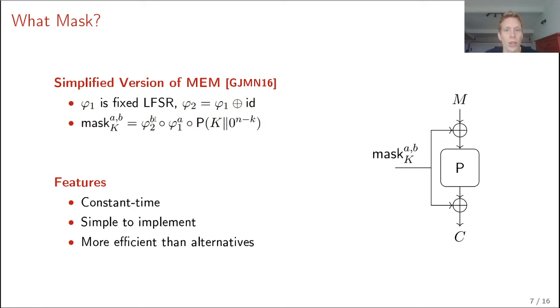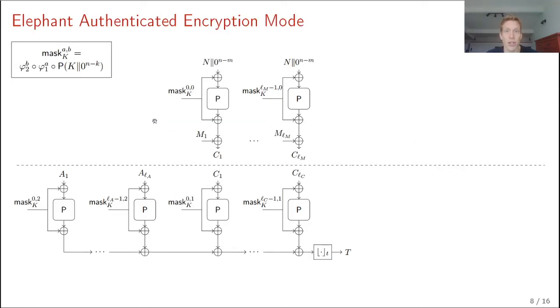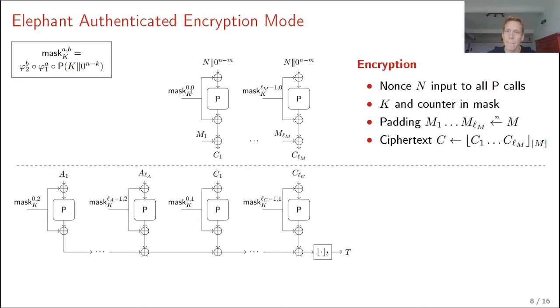Now we've set the primitive and the mask, we can go to the mode. And this is the Elephant authenticated encryption mode. So in the top left here, I copied the definition of the mask from the previous slide. And I will go through the picture from top to bottom, starting with the top, of course. And in the top we see the encryption. And the encryption gets its input a nonce. This nonce is appended with zeros and just plainly fed to all permutation calls. So without a counter yet. The counter is in the mask, just like the key. So the key is in the mask, of course. And we have a counter in the mask. Namely, A, B is 0, 0, 1, 0, 2, 0, up to Lm minus 1, 0. Where Lm is the number of message blocks. So we take the counter value A ranging from 0 to Lm minus 1. And B we keep 0. And this gives a keystream, which is added to the message to get the ciphertext.